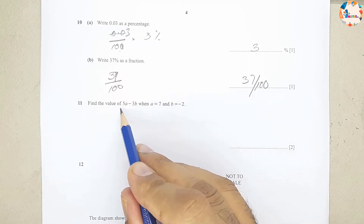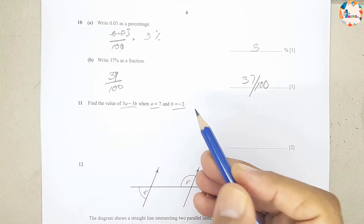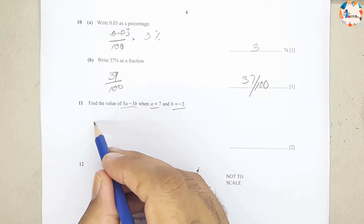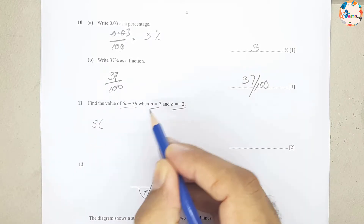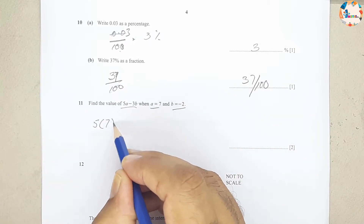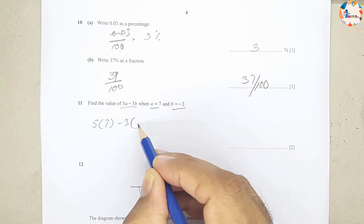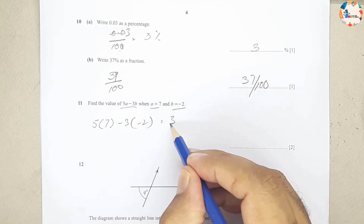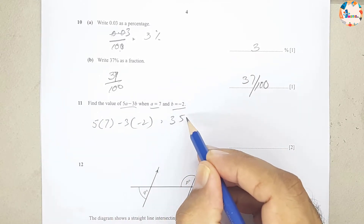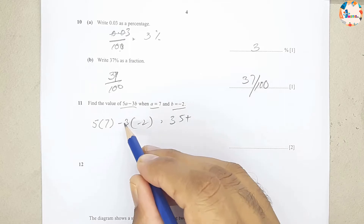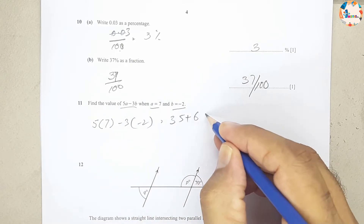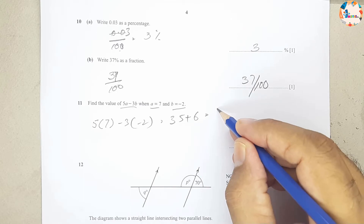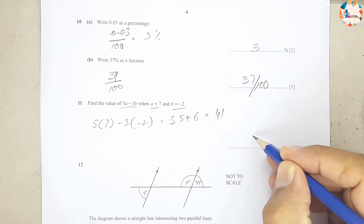Question number 11: find the value of 5a minus 3b when a = 7 and b = −2. Substituting: 5 × 7 minus 3 × (−2) = 35 + 6 = 41. Our answer is 41.